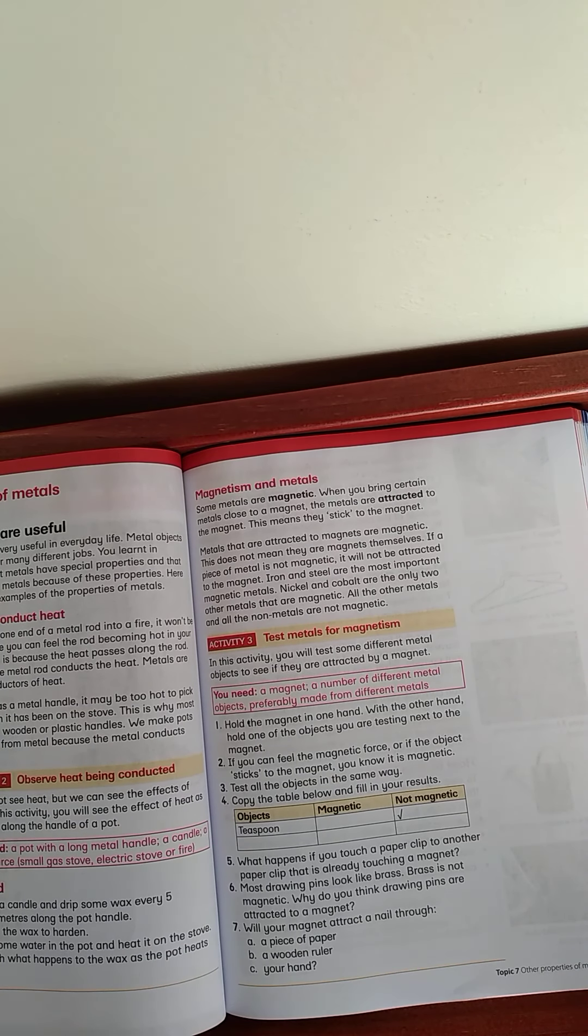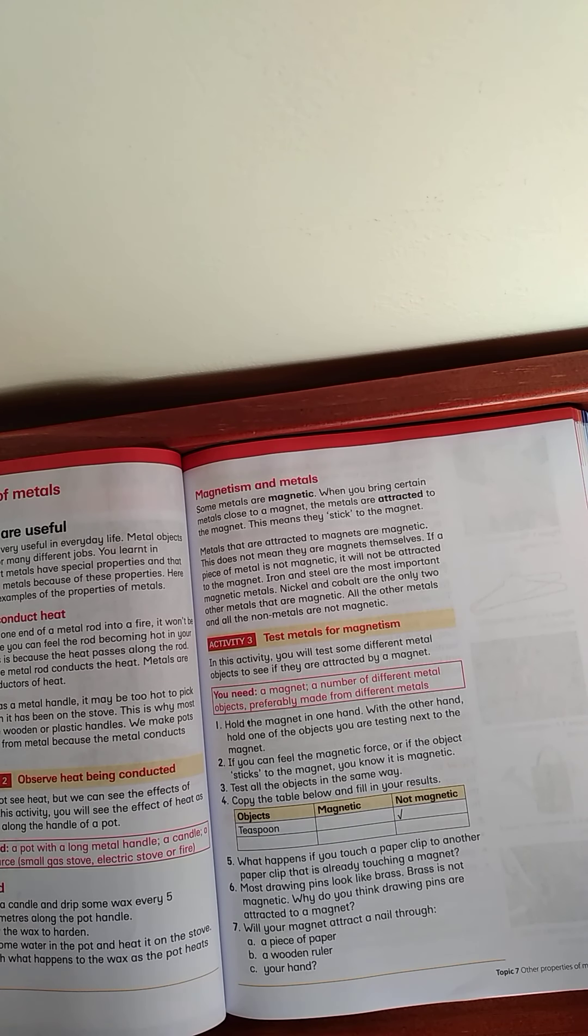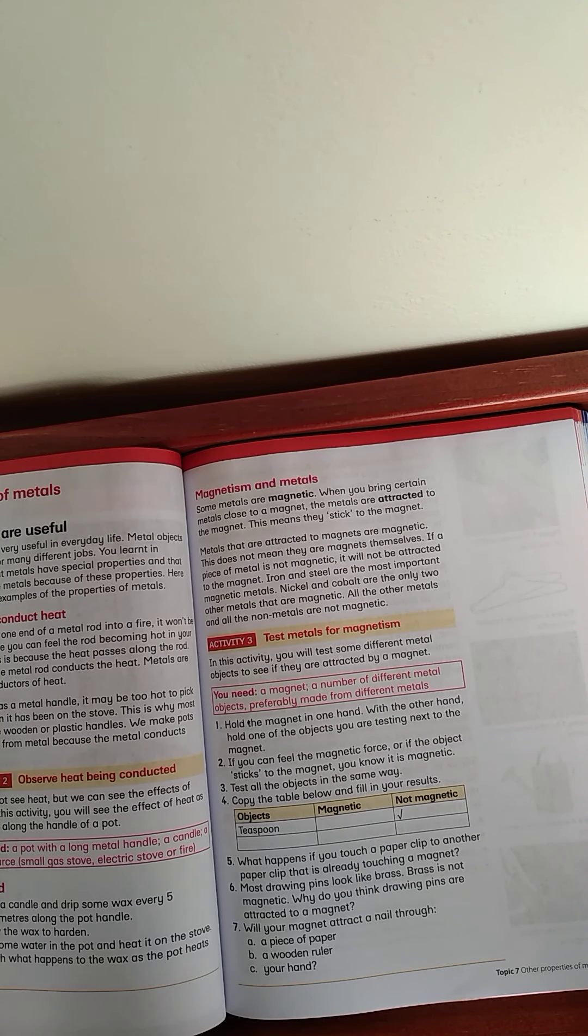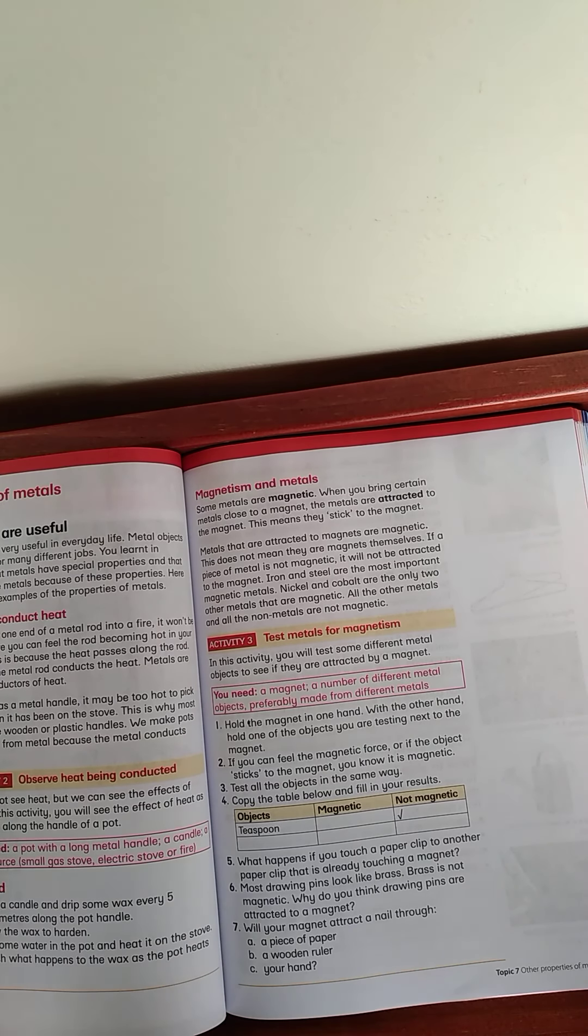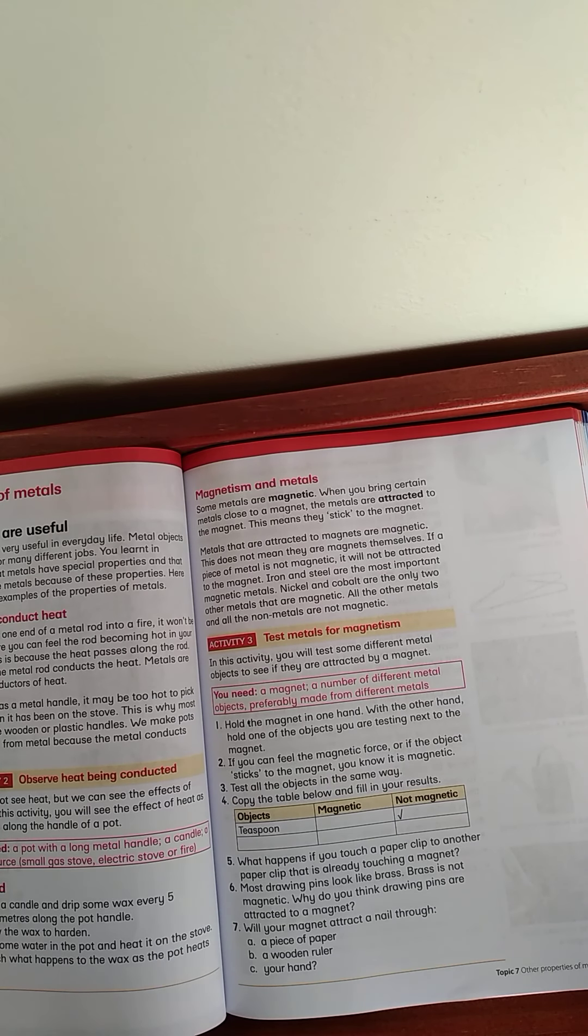Some metals are magnetic. When you bring certain metals close to a magnet, the metals are attracted to the magnet. This means they stick to the magnet. Metals that are attracted to magnets are magnetic. This does not mean they are magnets themselves. If a piece of metal is not magnetic, it will not attract to the magnet. Iron and steel are the most important magnetic metals. Nickel and cobalt are the only two other metals that are magnetic. All the other metals and all the non-metals are non-magnetic. That's really important to know.